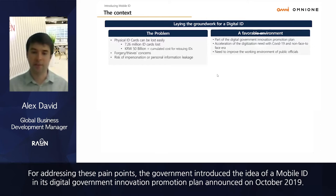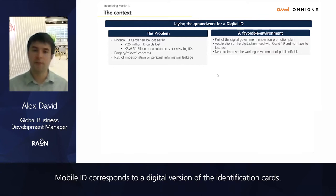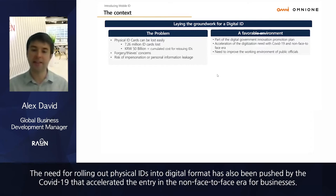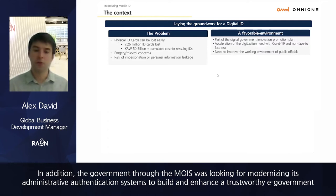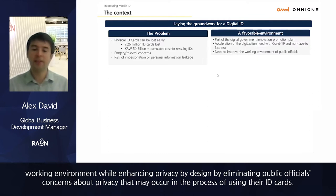Mobile ID corresponds to a digital version of identification cards. The need for rolling out physical IDs to digital formats was also pushed by COVID-19, which accelerated entry into the non-face-to-face era for businesses. In addition, the government, through MOIS, was looking to modernize its administrative authentication systems to build a trustworthy e-government working environment while enhancing privacy by design — eliminating public officials' concerns about privacy that may occur when using their ID cards.